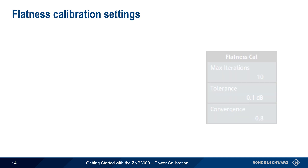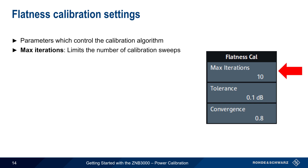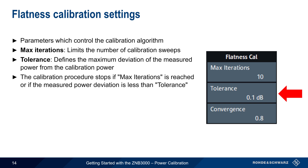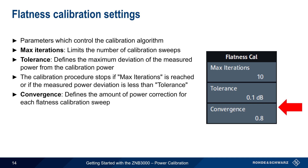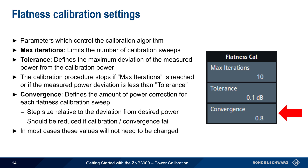The final set of configurable parameters are those for flatness calibration, which control the calibration algorithm. Max Iteration limits the number of calibration sweeps, and Tolerance defines the maximum allowable deviation of measured power from calibration power. The iterative routine stops once either max iterations is reached or the deviation is less than the tolerance value. Convergence defines the allowable change in power correction per flatness calibration sweep — specifically, the step size relative to the amount of deviation from the desired power level. This value should be reduced if calibration or convergence fails. In most cases, the default values will not need to be changed.